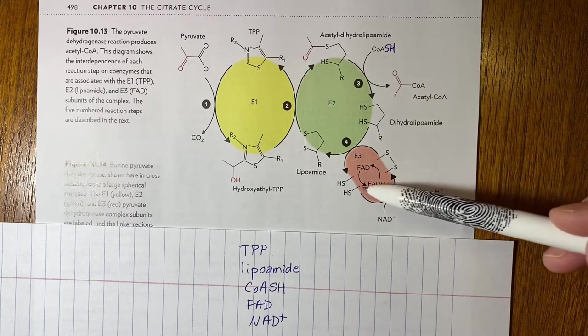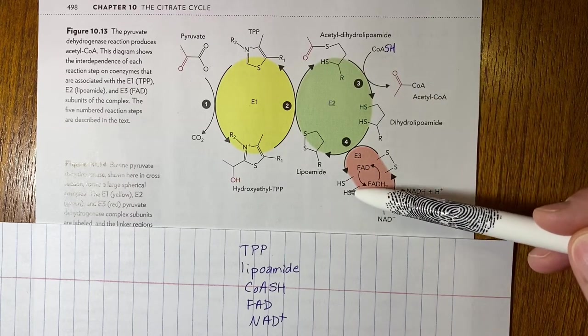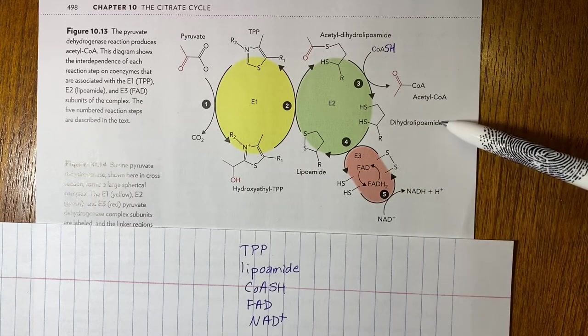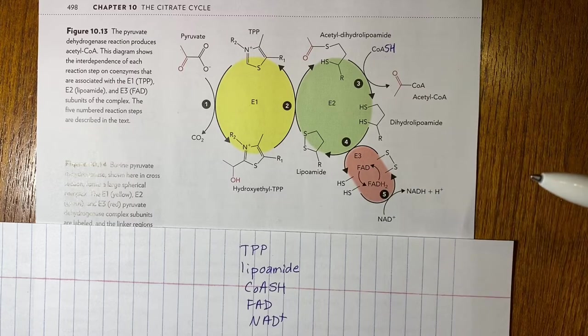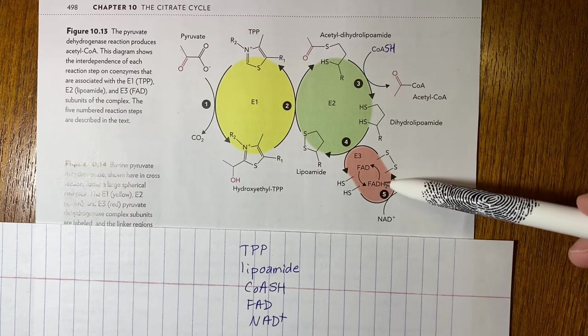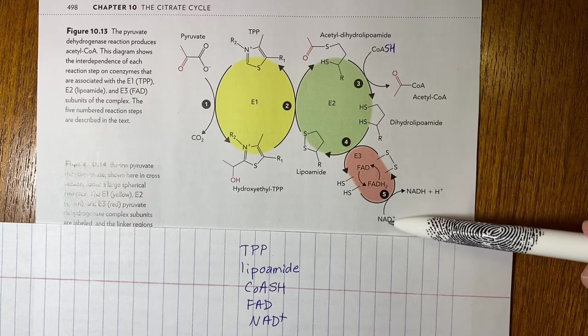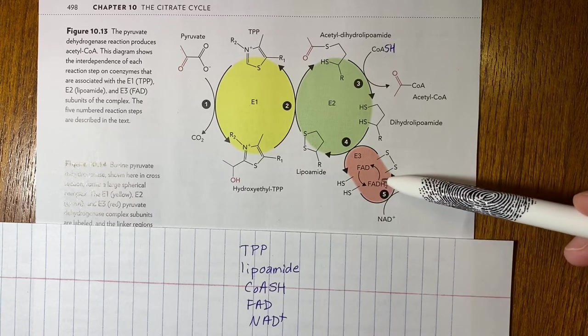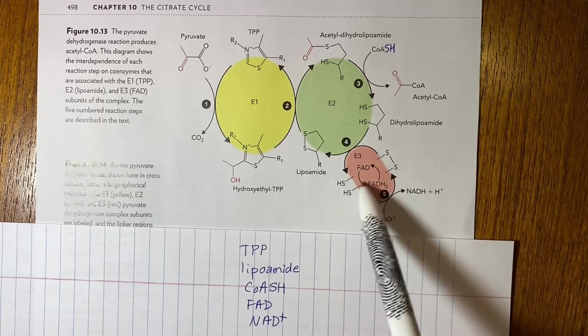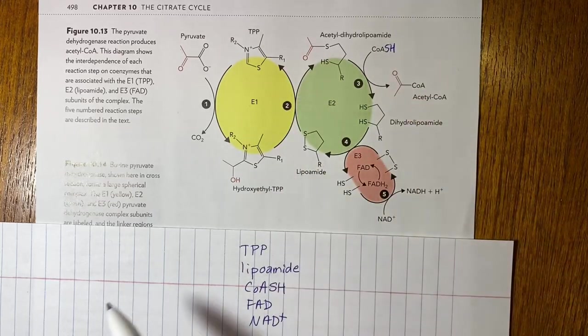So FAD's role is to re-oxidize the two thiol groups from the dihydrolipoamide. So once that happens FADH2 is now in the reduced form. NAD+ comes in, re-oxidizes this to FAD so then this is ready to do its reaction again through another cycle of the enzyme.